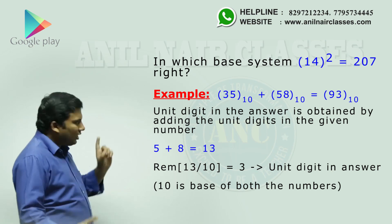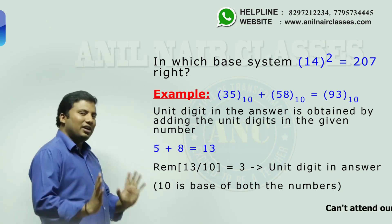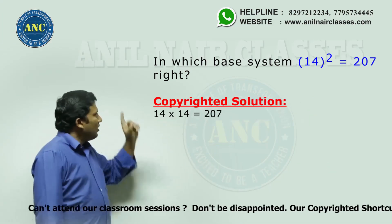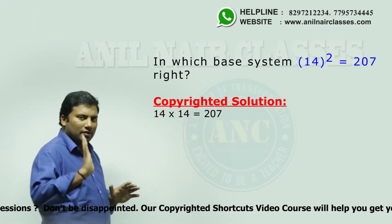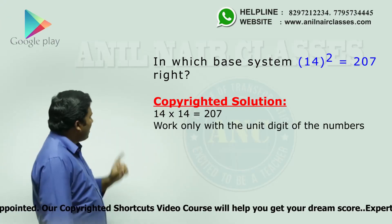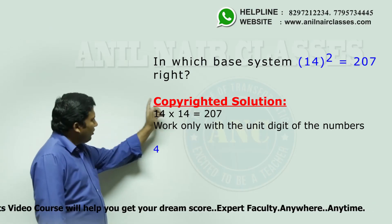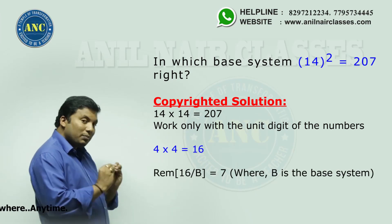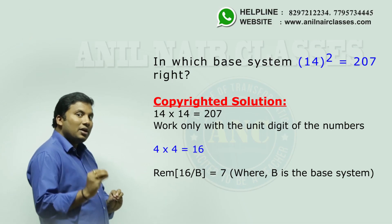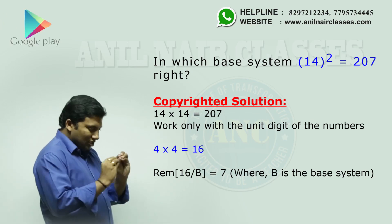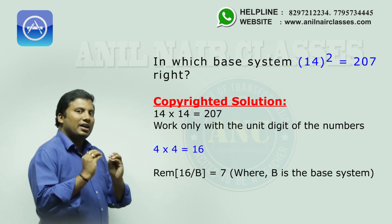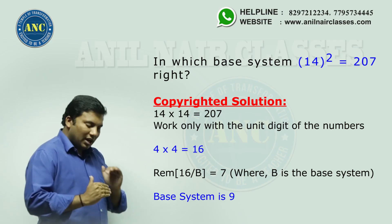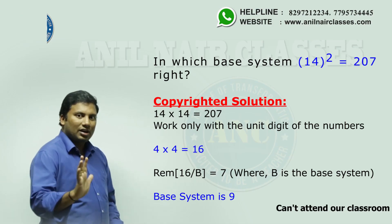If you understand this example, you can solve the main question very easily. Expand (14)² as 14 × 14 = 207. Just attack the unit digits. The unit digit in 14 is 4, and the unit digit in 14 is 4. So 4 × 4 = 16. Now, 16 divided by which base system gives a remainder of 7? The answer is base 9, because 16 ÷ 9 gives 9 ones are 9, and the remainder is 7. So the base system is 9.